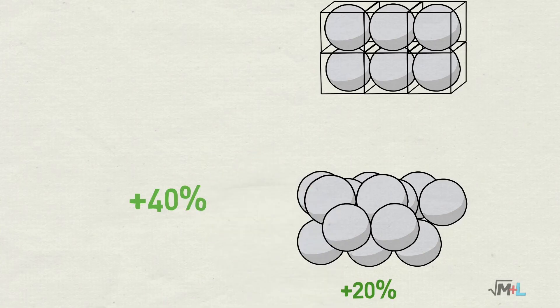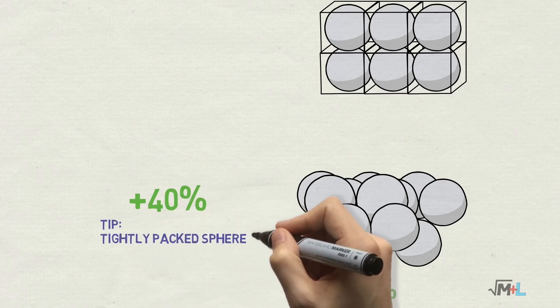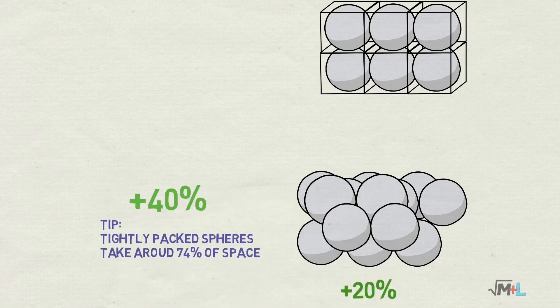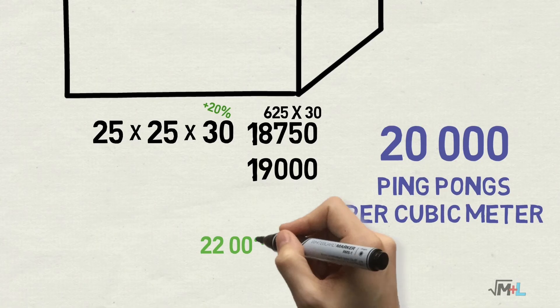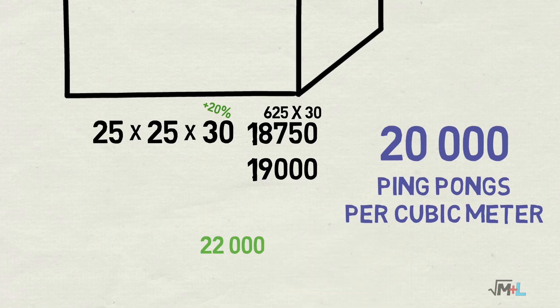When estimating packaging of the ball I should have added here 40% and not only 20, so I underestimated here a bit. By the way, it's worth remembering that tightly packed spheres take around 74% of the space of the package. As a result I underestimated the number of balls that can fit into cubic meter. In fact it's just over 22,000.